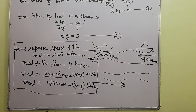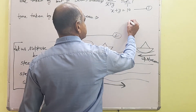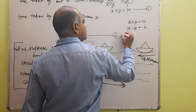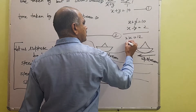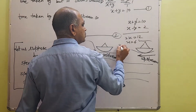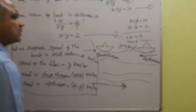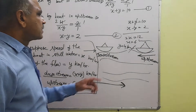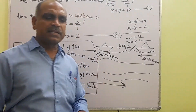First equation और second equation को elimination method से solve करते हैं — y eliminate हो जाएगा। x + y = 10 और x − y = 2 जोड़ने पर: 2x = 12, तो x = 6 km/hr। x की value put करने पर y = 4 km/hr। x boat की speed है — ज्यादा है, और y पानी के flow की speed है — कम है।